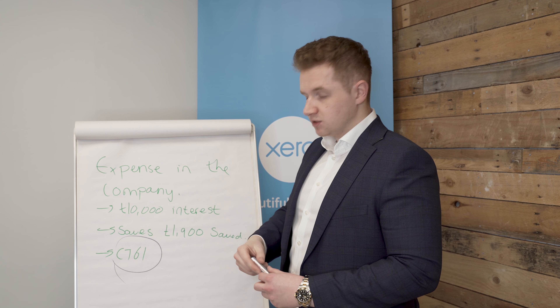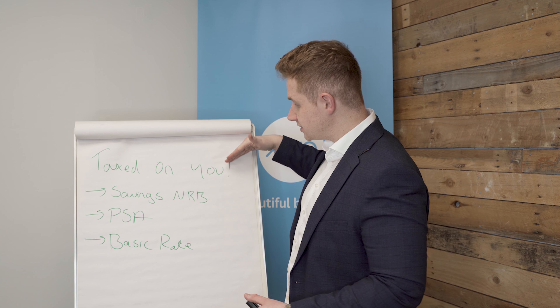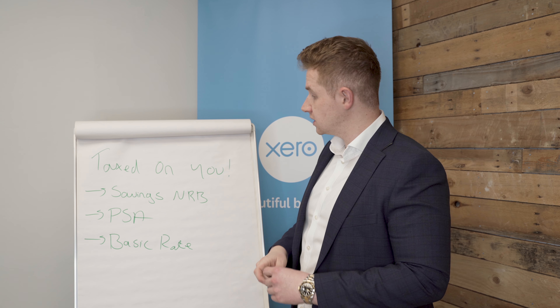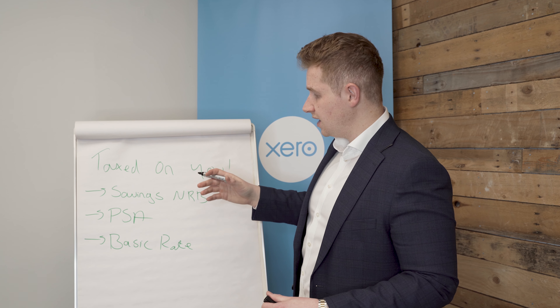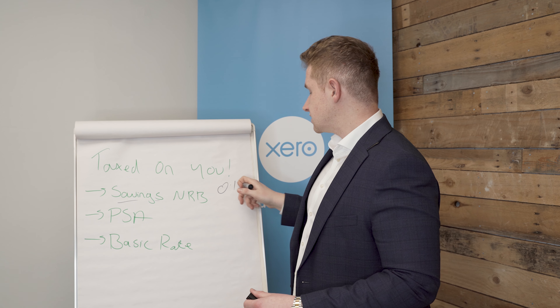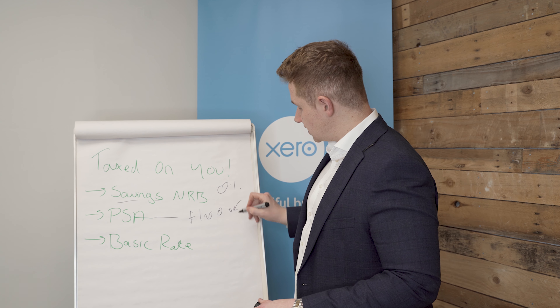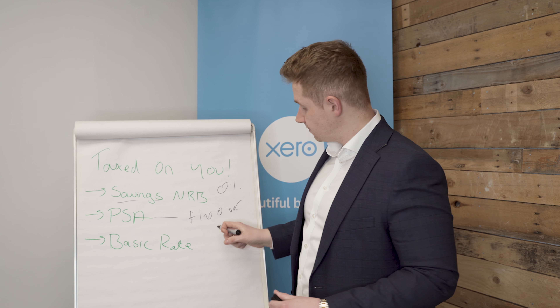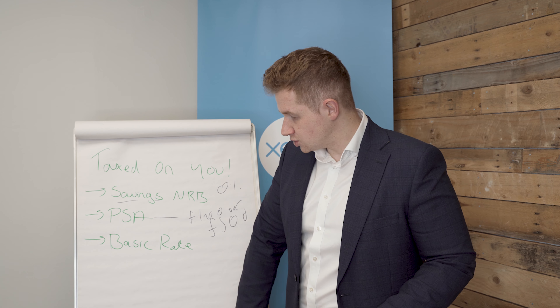So we've saved £1,900 in corporation tax, but you do need to remember that interest income is taxed on you personally. You only pay income tax on it — no National Insurance — but there are several bands that can result in you paying zero or a very low rate. Your savings nil rate band means broadly the first £5,000 of taxable income from savings is taxed at zero percent. The personal savings allowance is £1,000, so if you're a basic rate taxpayer you can receive that completely tax-free. If you're a higher rate taxpayer it's reduced to £500, but still tax-free. Even beyond those allowances, basic rate taxpayers only pay 20% on interest income.